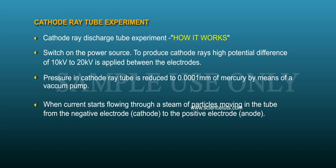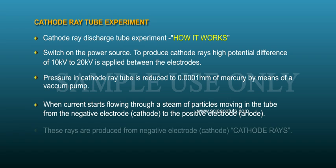When current starts flowing, a stream of particles moves in the tube from the negative electrode (cathode) to the positive electrode (anode). These rays are produced from the negative electrode, the cathode.